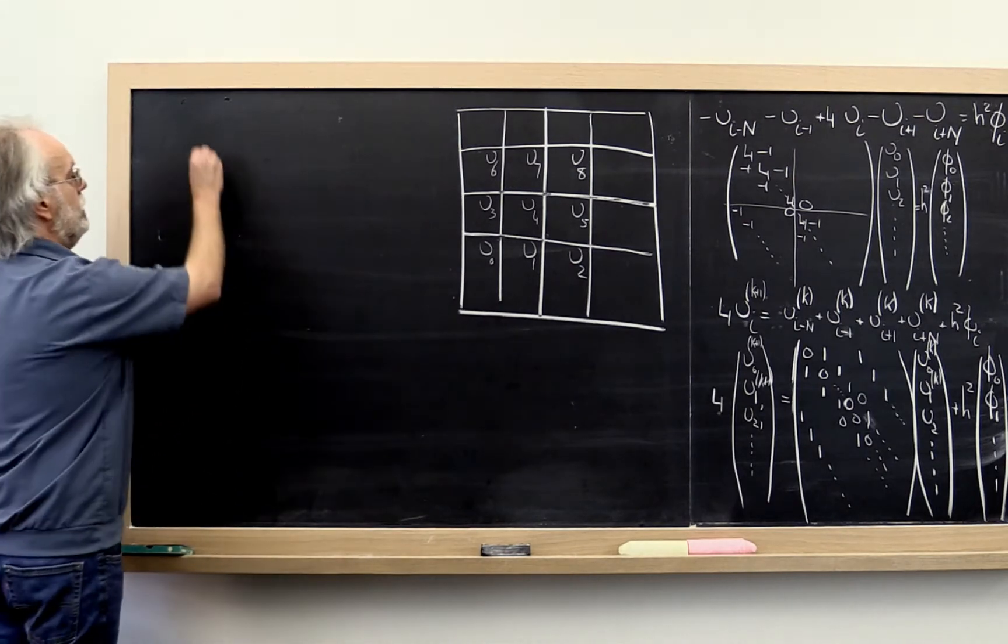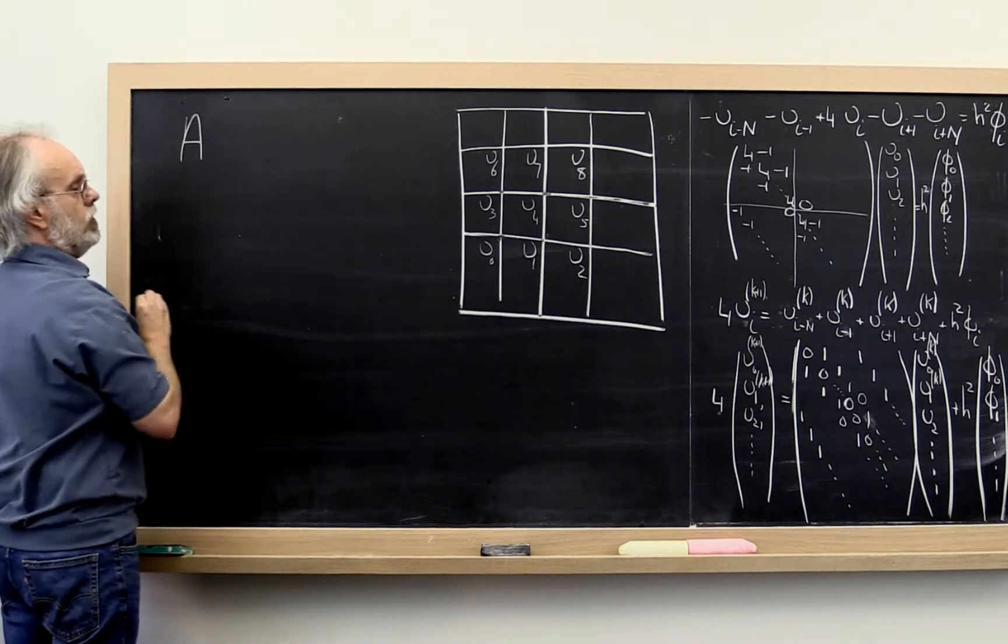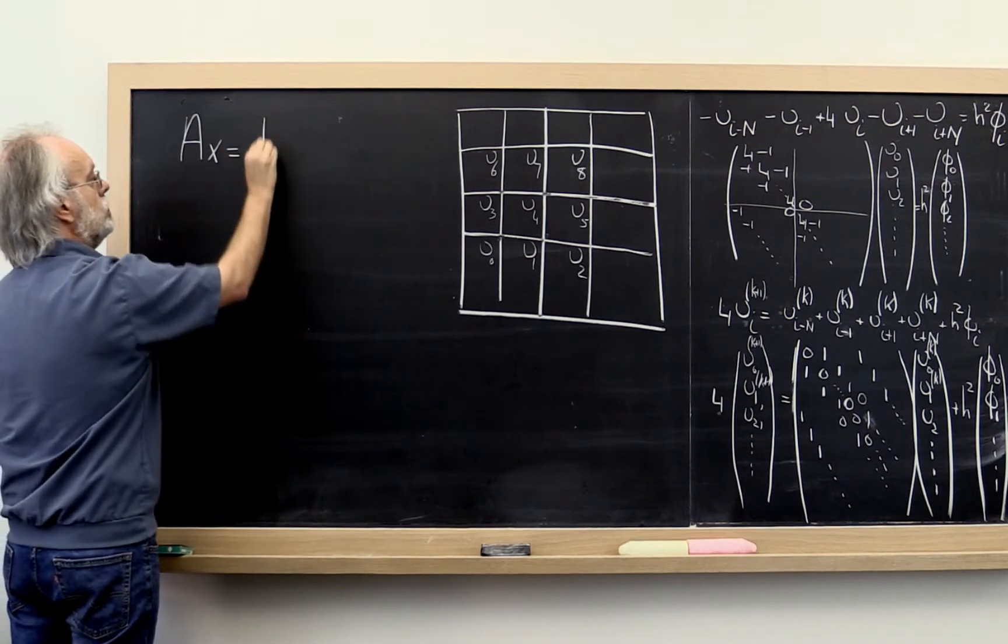Let's get away from the specific example and let's talk about how we want to solve AX is equal to B.